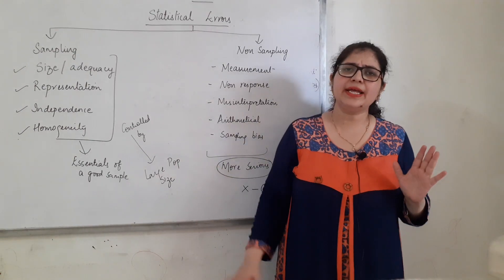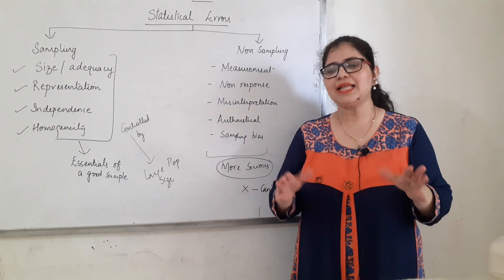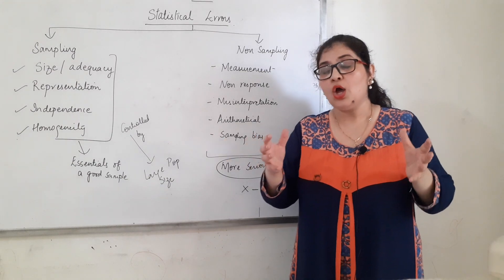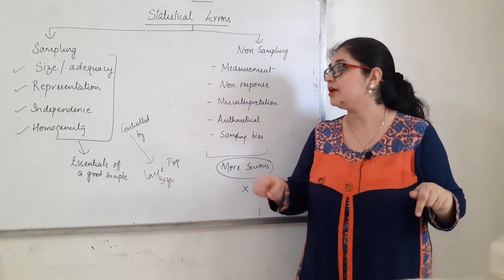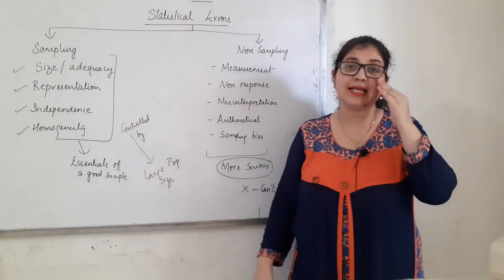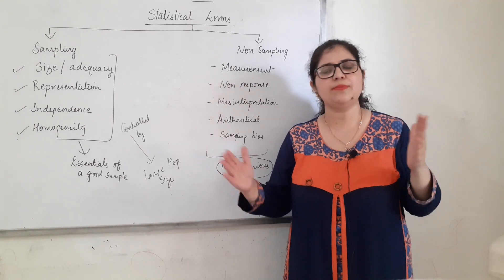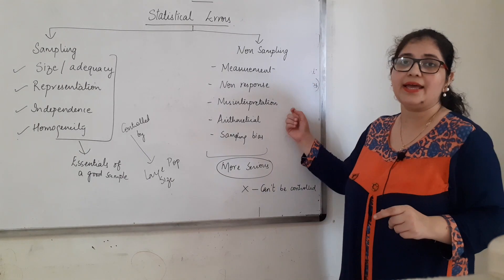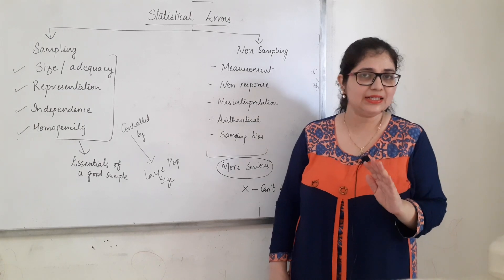Agar sampling error ho bhi jaye toh isse control kaise karein? Sabse pehle toh size of sample bada lo — jo sample chota reh gaya, thoda bada kar lo. Aur jab bada karo toh ensure karna ki representation ho, sare guna jayen, independent ho, aur homogeneity ko bhi thik kar lo. Toh yeh controllable hai. Lekin isse zyada khatarnaak hote hai non-sampling errors, kyunki inhe correct karne ka koi tarika nahi hai.